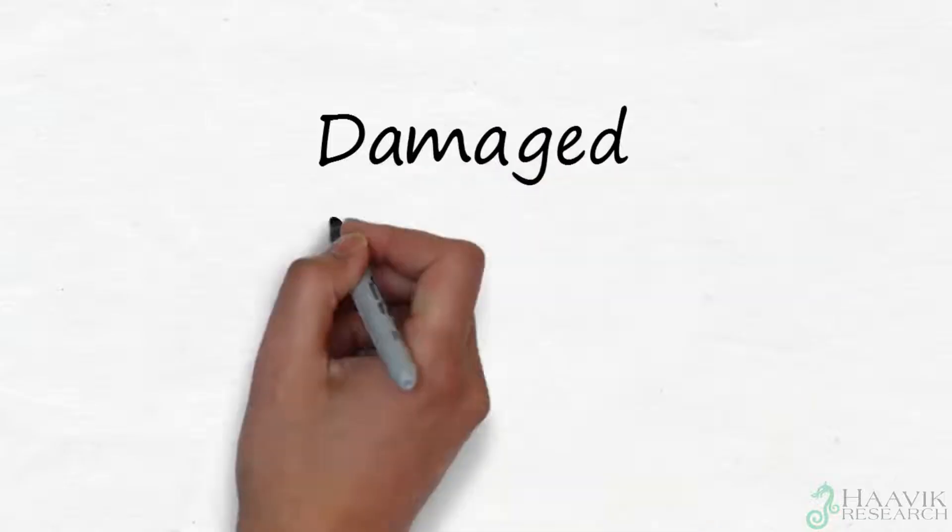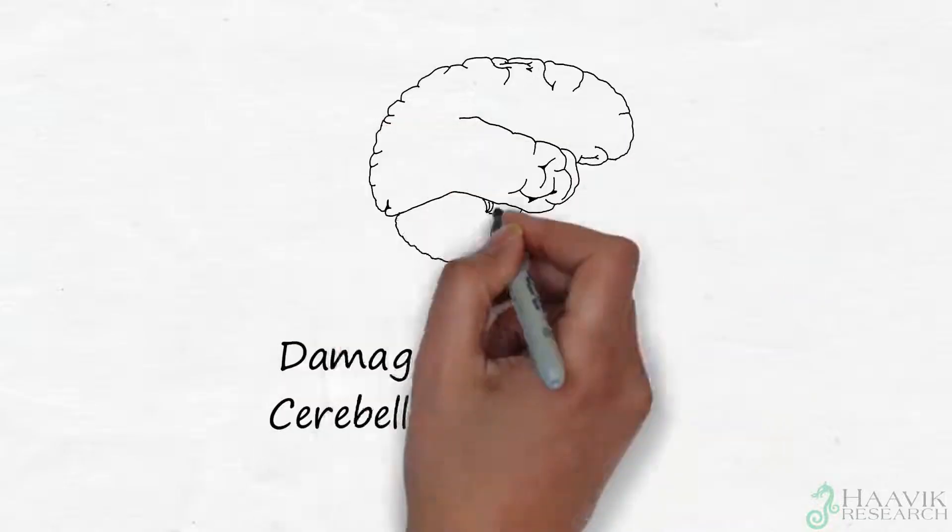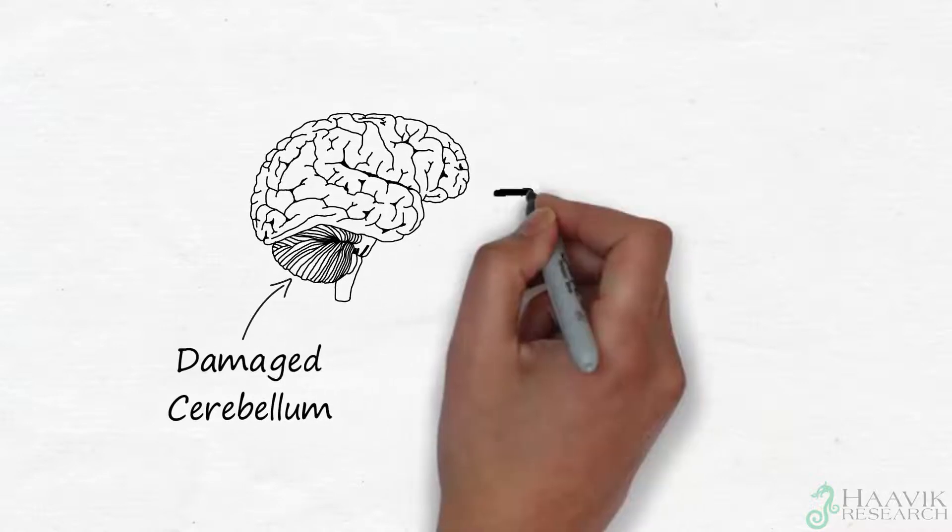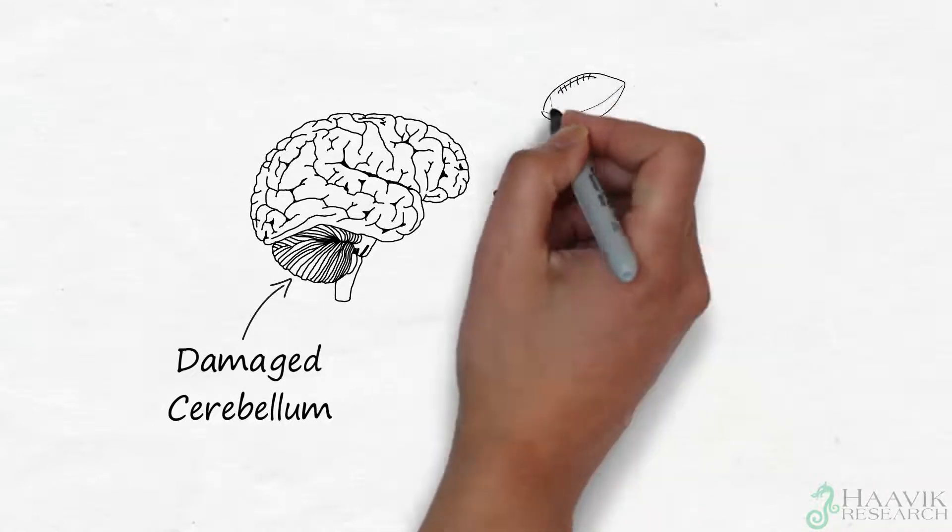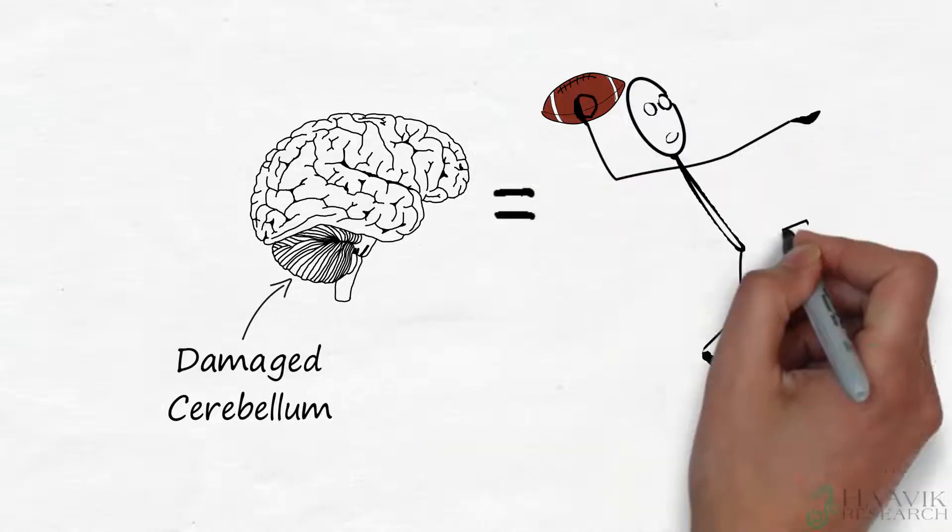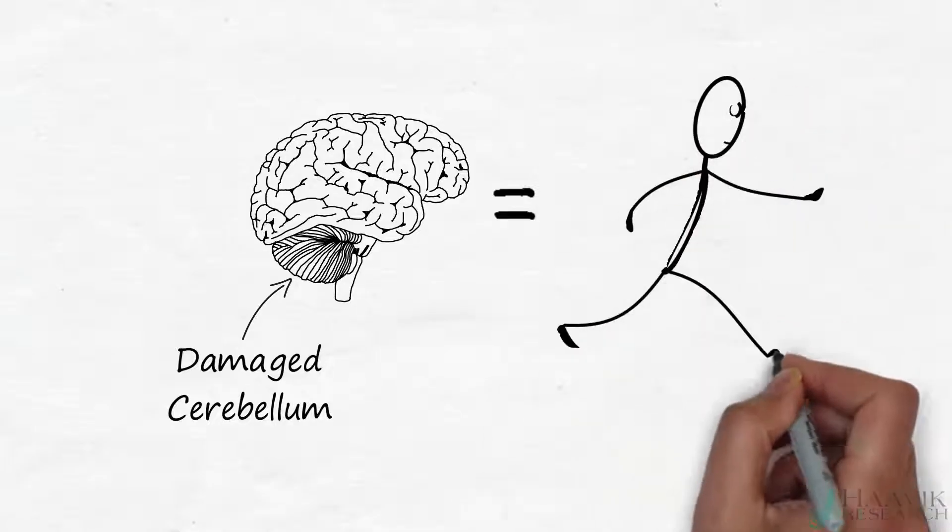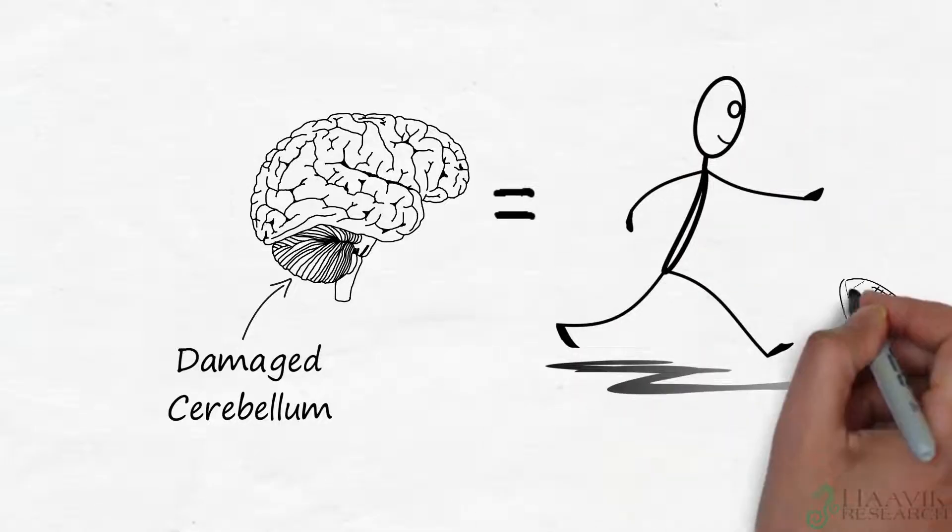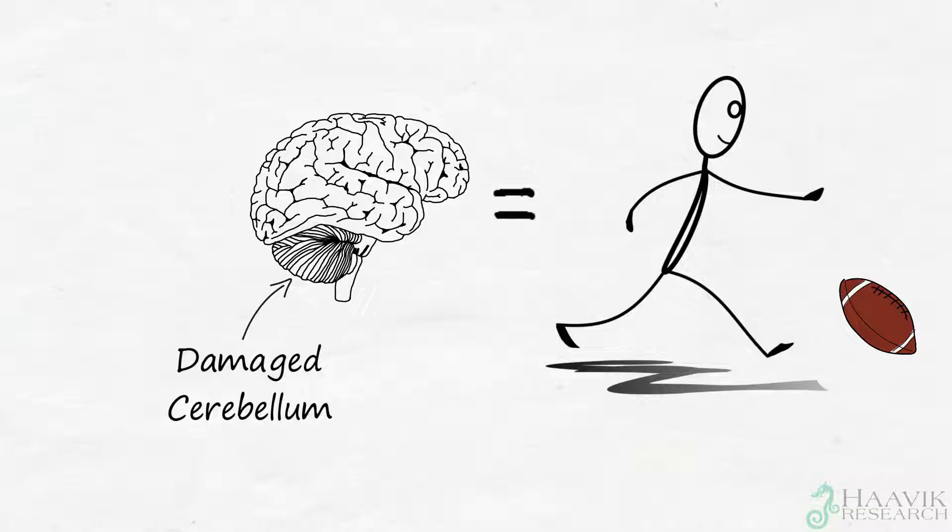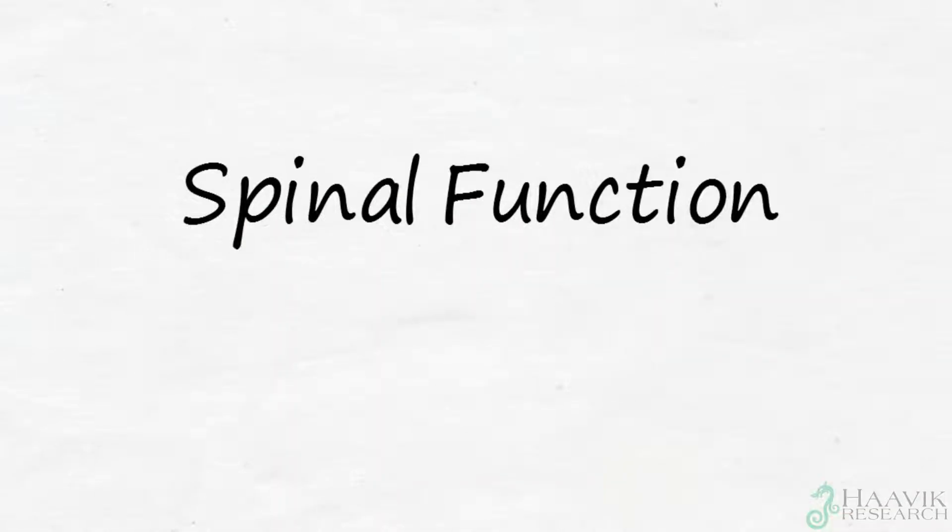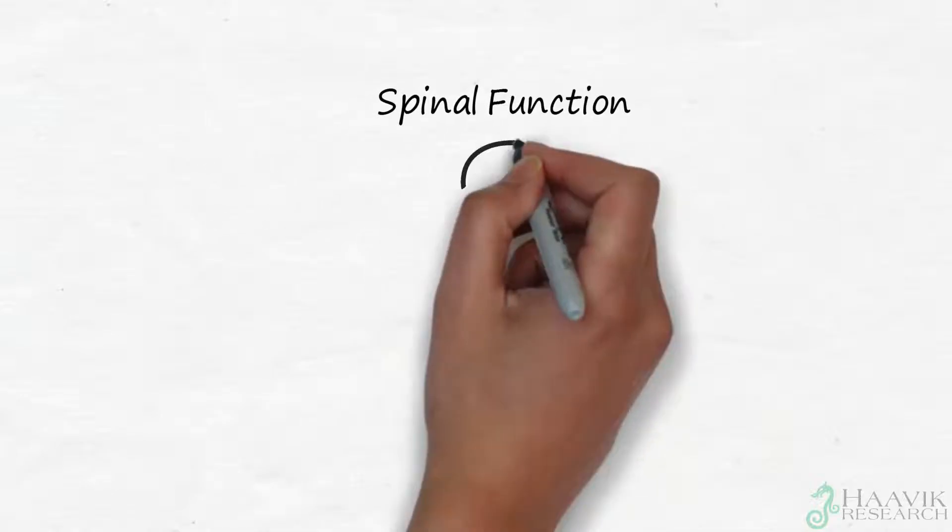People with damaged cerebellums fail to release the ball when they are throwing at an optimal time in over-arm throwing, leading to slower ball speeds and resulting in slower elbow extension velocities and accelerations. There is also an absence of elbow extension deacceleration at the end of the throw and slower wrist flexion velocities. What these researchers found was that spinal function also influenced the way people perform arm throwing movements.